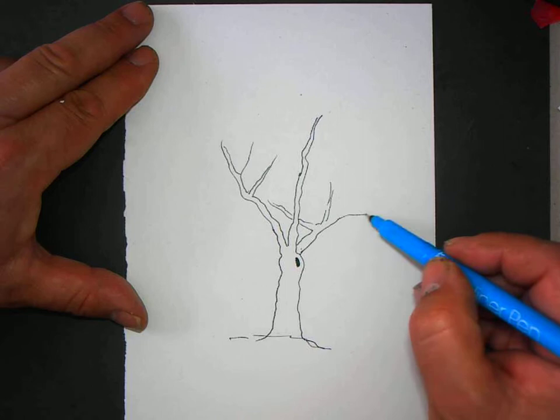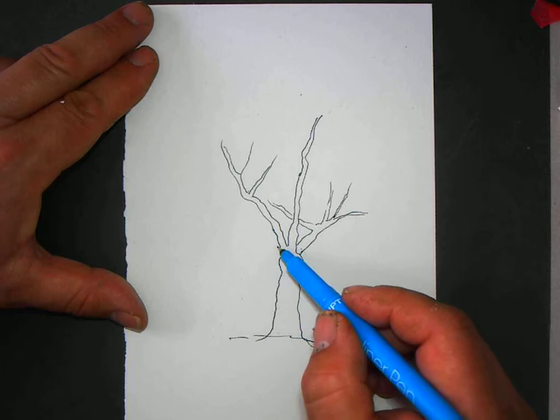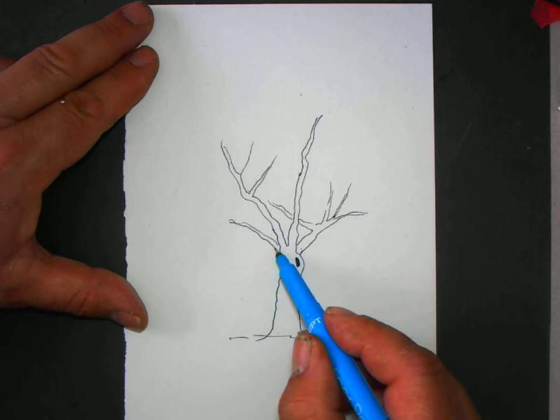Each time I split the branch, it gets smaller. But as the branch comes in, it gets thicker.